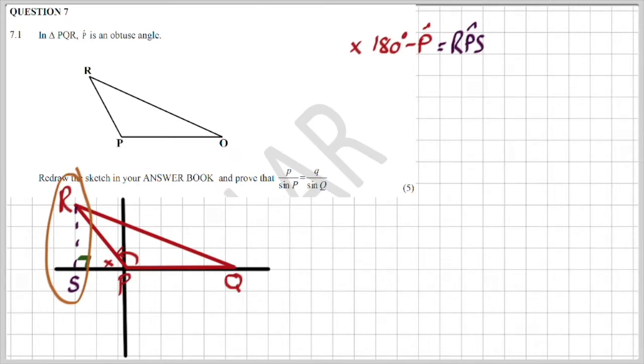So what am I doing? I'm first of all getting angle RPS as you saw me write down there. It's 180 degrees minus angle P. So in triangle RSP, I am getting RS over RP.